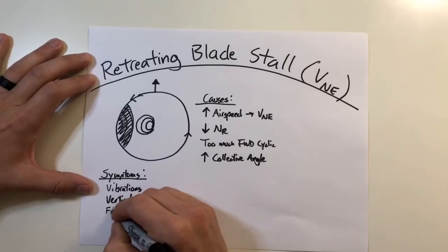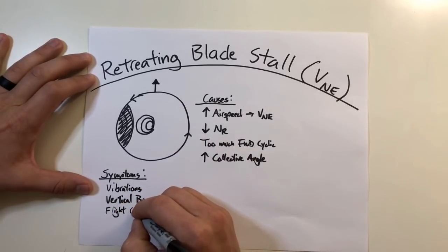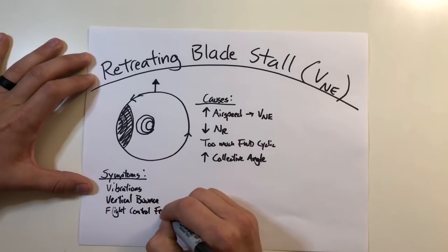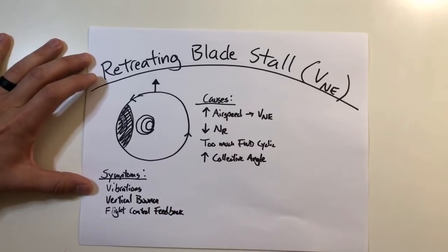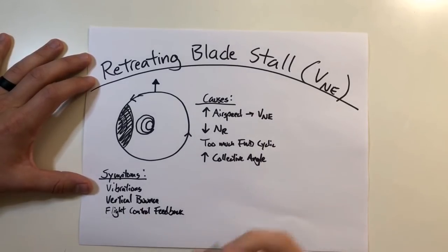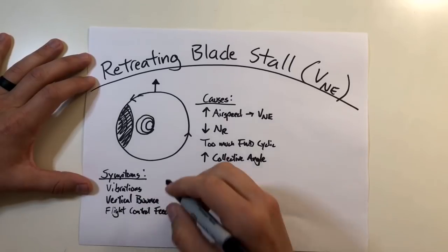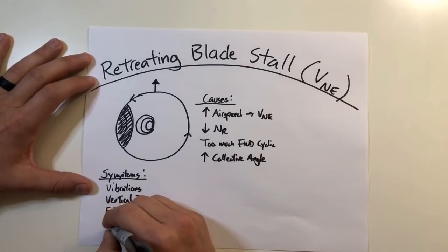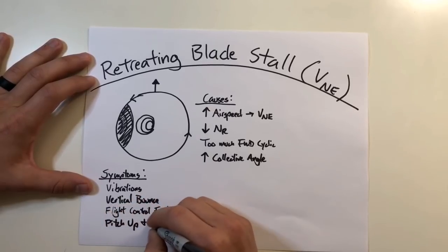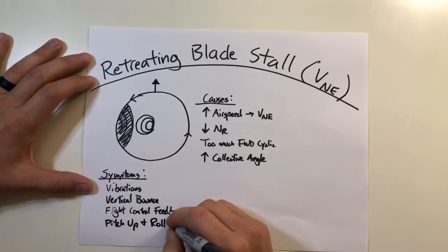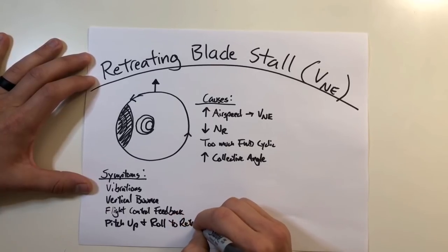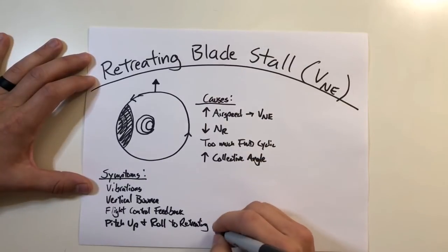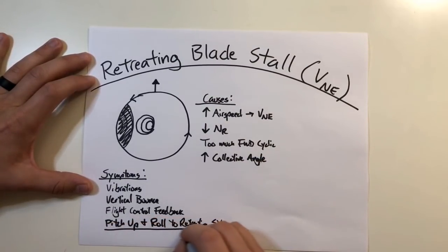If you continue, you're going to get some kind of flight control feedback — potentially some stiffening or ineffectiveness of the flight controls, depending on the rigging. But if you continue to push through the condition at even higher airspeed, you would potentially get into an uncommanded and potentially violent pitching up of the nose. The nose pitches up and you would get a roll to the retreating side — for a counterclockwise rotating rotor system, that's a roll to the left.